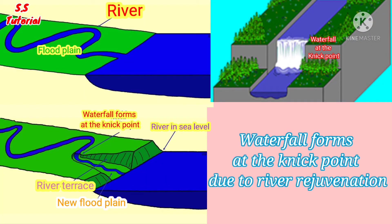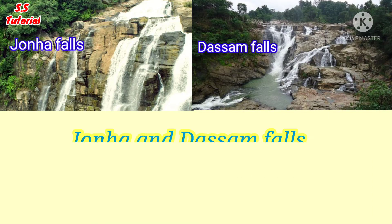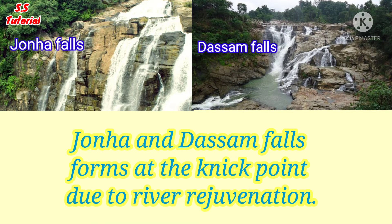As a result of rejuvenation of the river, a nick point is formed in the course of the river. These nick points change the slope along the length of the river, which creates a waterfall. Jona Falls and Dasam Falls in India are formed in this way.